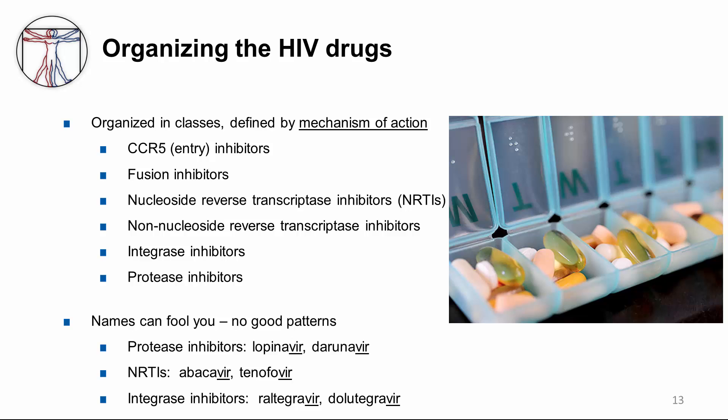How do we organize the HIV drugs in our mind? The most straightforward and traditional way is to organize by mechanism of action. Unfortunately, the names can fool you and there's no great clue in that regard. For example, protease inhibitors lopinavir and darunavir sound very similar to NRTIs abacavir and tenofovir. Although with integrase inhibitors, raltegravir and dolutegravir can give you a clue with the 'gravir' ending that we're talking about integrase inhibitors. But suffice to say, there's no really good clue.